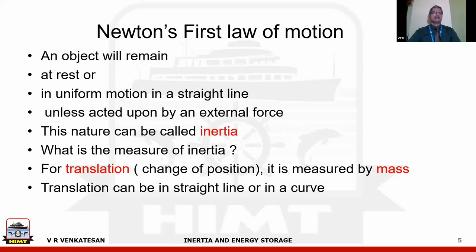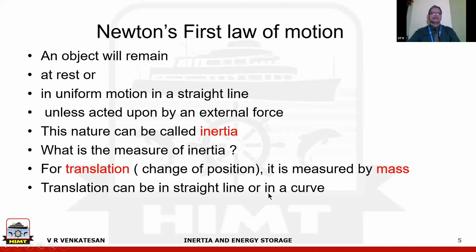Newton's first law states: an object will remain at rest or in uniform motion in a straight line unless acted on by an external force. This property is called inertia. For translation — when the position of an object changes — inertia is measured by mass. Translation can be in a straight line or a curve, but the principle means the object changes its position.